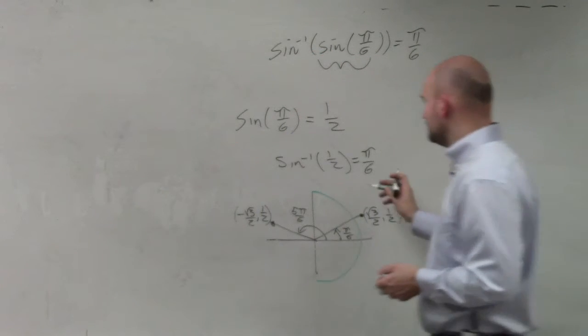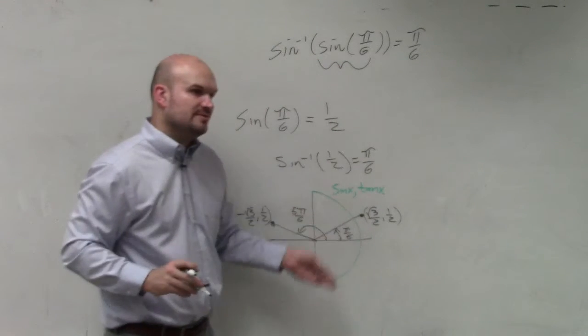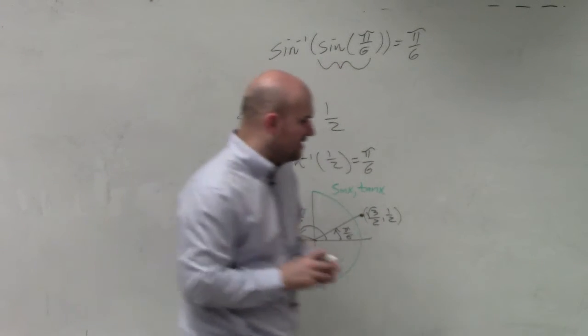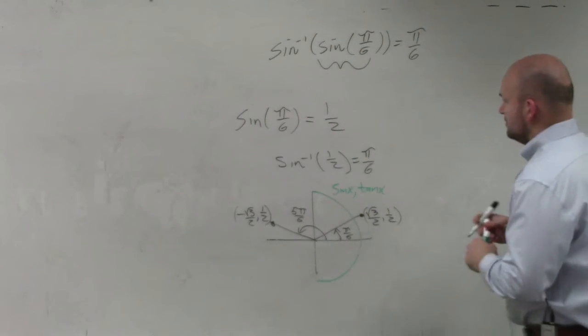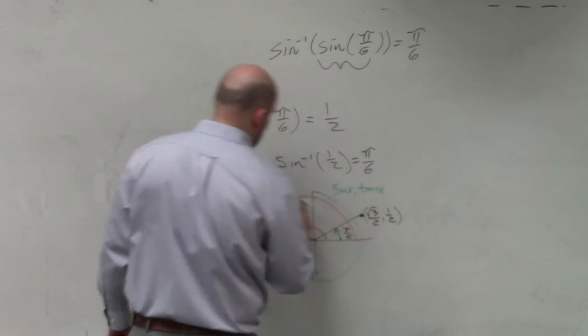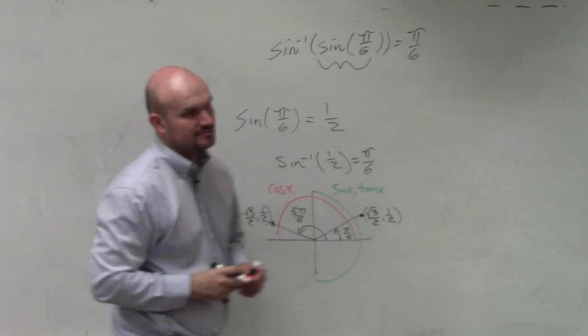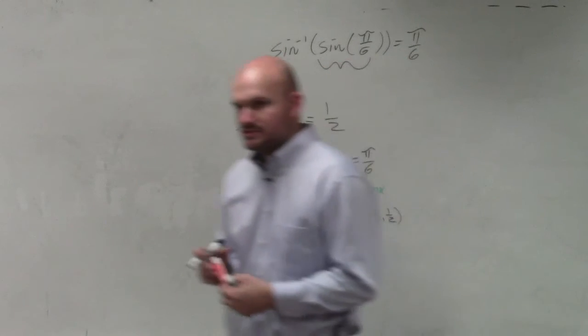If you remember, sine of x and tangent of x had the restriction of the first and fourth quadrant, whereas cosine had a restriction of the first and second quadrant. So when you're finding the inverse, you're finding the angle for cosine, it has to be within the first and second quadrants.